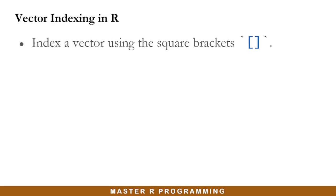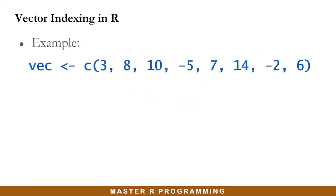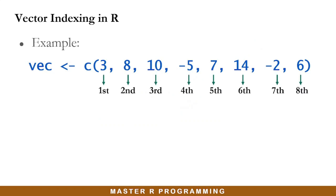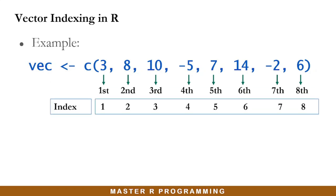Elements in a vector can be retrieved using their positions, and this is called indexing. To access or retrieve an element using indexing, you write the name of the vector followed by square brackets. Inside the square bracket, you specify the position of the element you want to retrieve, and the element at that position will be returned. For example, in this vector named vec, each element has its position from first to eighth, and the index is simply the number for that position.